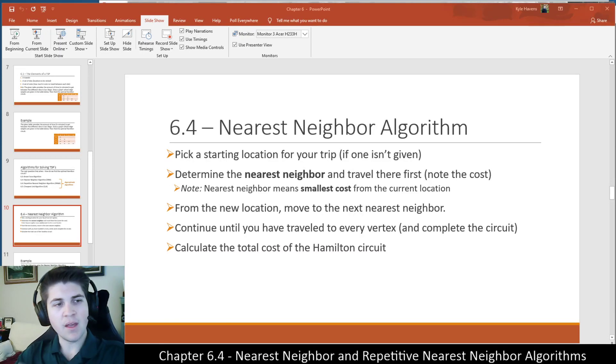The nearest neighbor algorithm is one of the algorithms that allows us to find a cheap Hamilton circuit, or in other words, a nice solution to a traveling salesman problem, a way to travel between a bunch of different points in an efficient, less costly manner.